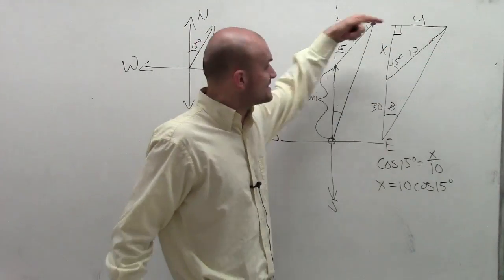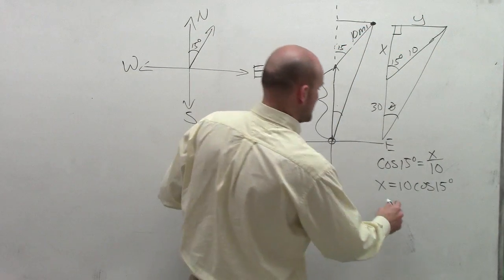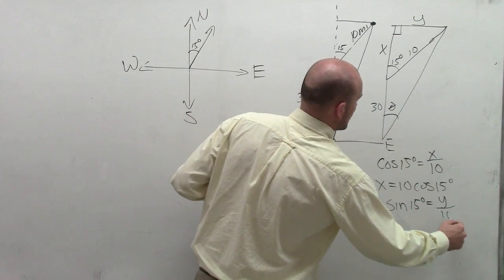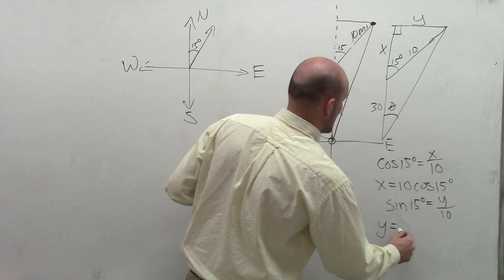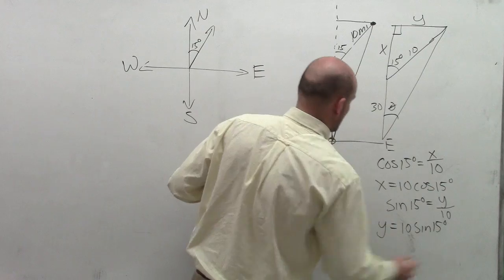Now, to solve for y, it's not going to be the adjacent side, but now it's going to be the opposite side. So I could write sine of 15 degrees equals y over 10, where y now equals 10 times sine of 15 degrees.